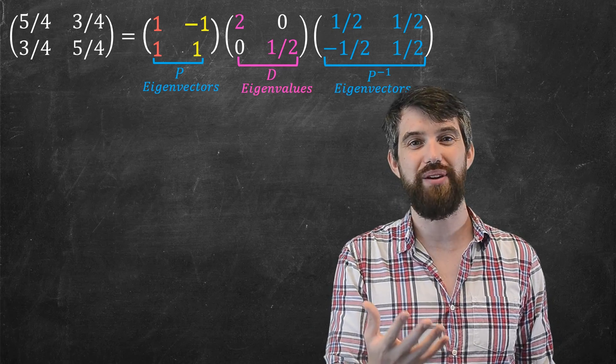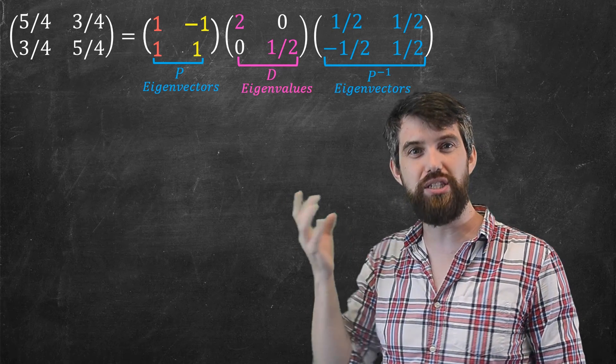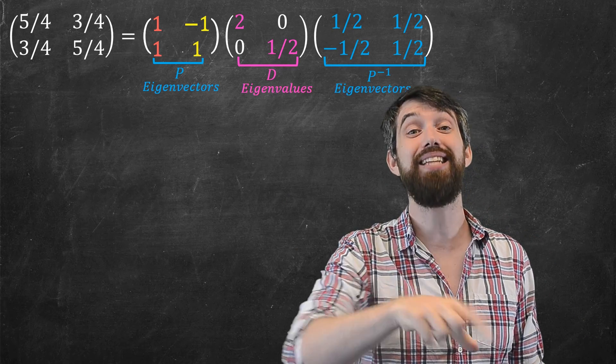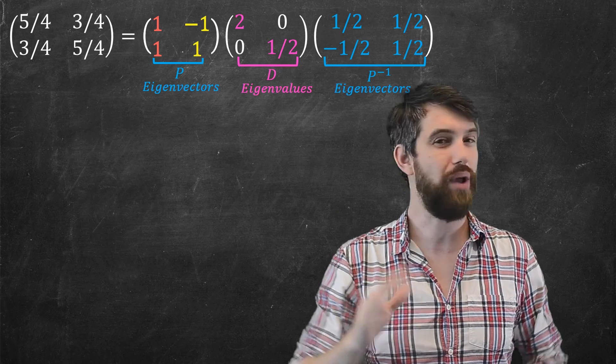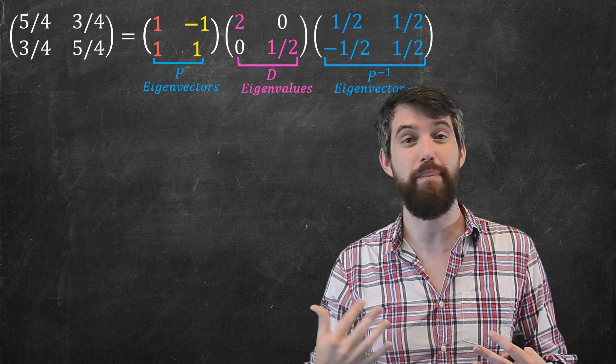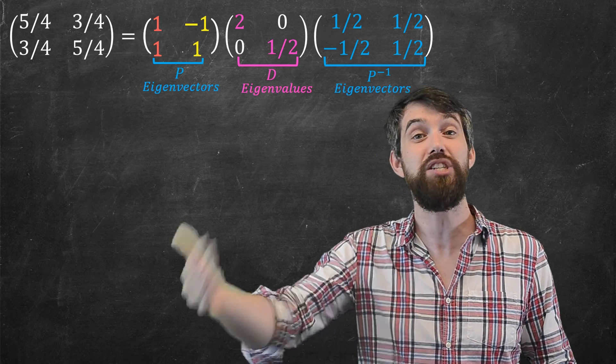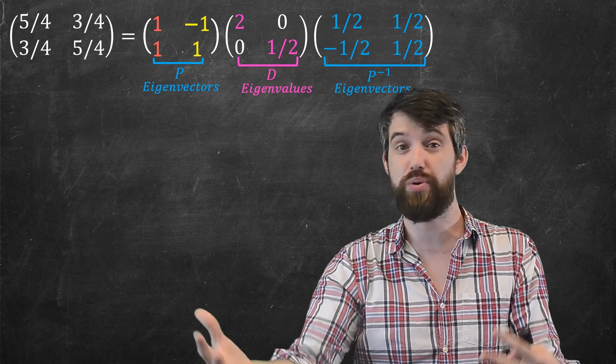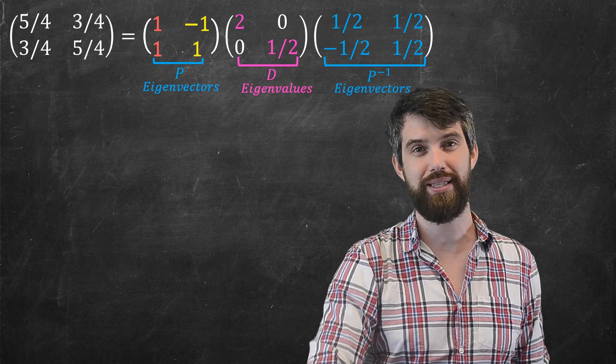We're just going to go and have for the P matrix, it's just going to be the eigenvectors. And then for the diagonal matrix, along that main diagonal are just the corresponding eigenvalues in the same order in which the eigenvectors appear in P. And then P inverse, you just take the inverse of that particular matrix. So what we have here is a product of three matrices of which this middle one is a diagonal matrix.